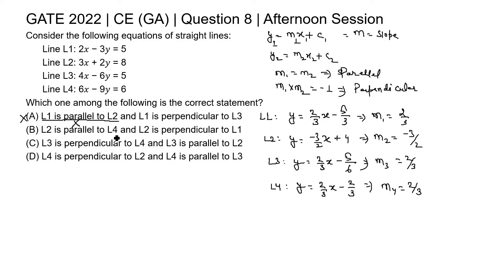Option B: L2 is parallel to L4. The slopes of L2 and L4 are −3/2 and 2/3 respectively, which are again not the same. So this is also wrong, and option B is incorrect.